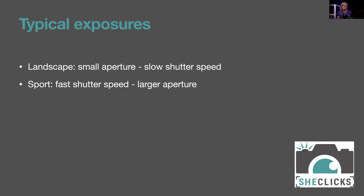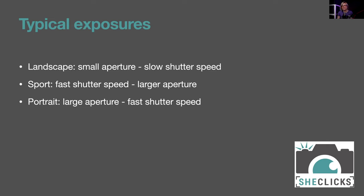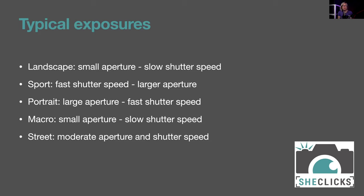For portraits, we generally use large apertures to blur the background, which means faster shutter speeds — great for hand-holding, moving around, and experimenting with angles. For macro photography, we usually want a small aperture for lots of depth of field, which tends to mean slow shutter speeds and a tripod. Not just because of shutter speed — in macro, even slight movement can significantly change composition and focus point. For street photography, a moderate aperture like f/8 and moderate shutter speed like 1/125s gives flexibility — you're prepared for anything.